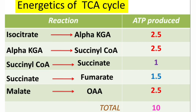Conversion of succinyl-CoA to succinate generates one GTP directly. Conversion of succinate to fumarate generates one FADH2, which produces 1.5 ATPs in the electron transport chain. Oxidation of malate to oxaloacetate generates one more NADH, equal to 2.5 ATPs. The total ATP yield when one molecule of acetyl-CoA enters the TCA cycle is 10 ATPs.